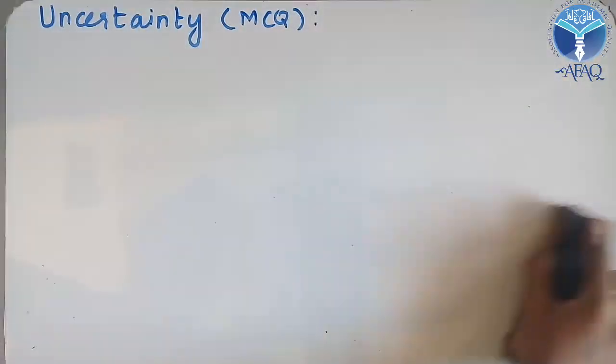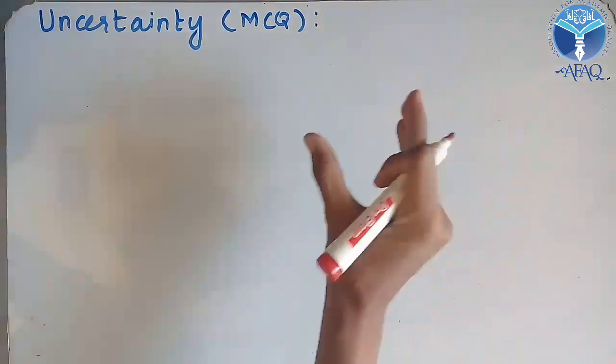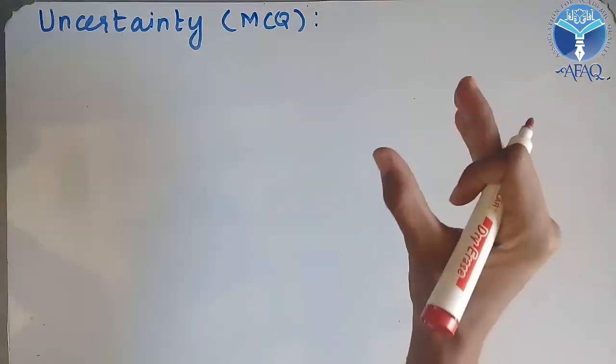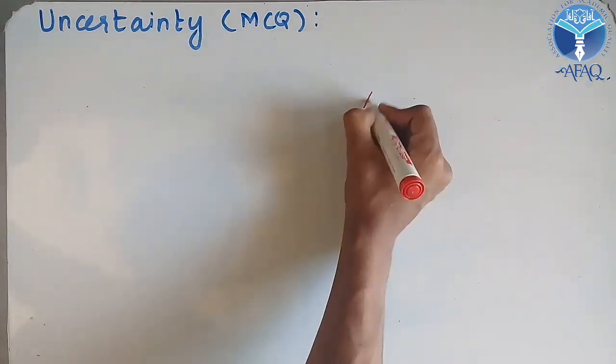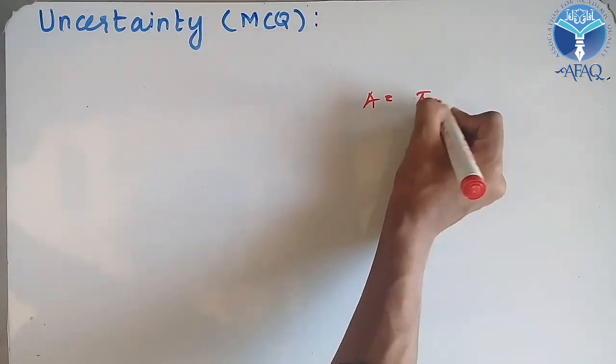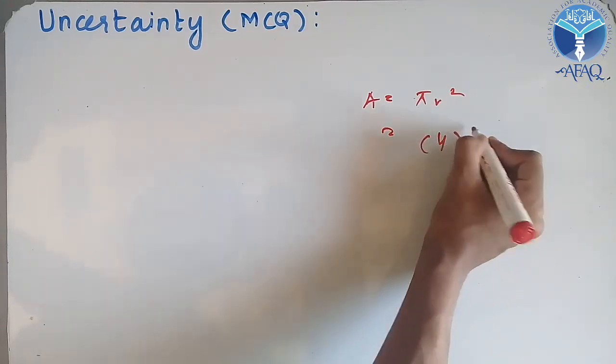So if I talk about the power of quantity, if the percentage of uncertainty in the radius is 4%, what will be the percentage of uncertainty in the area? Area is equal to π r². If the percentage of uncertainty is 4%, students think 4 to the power of 2 equals 16%.